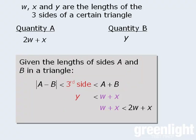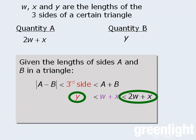So at this point, we can see that we have two inequalities that both feature W plus X. As such, we can combine these inequalities to get a three-part inequality. When we do this, we can clearly see that 2W plus X is greater than Y, which means the answer here is A.